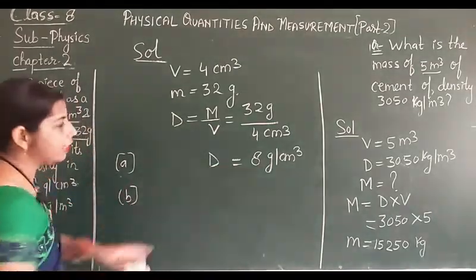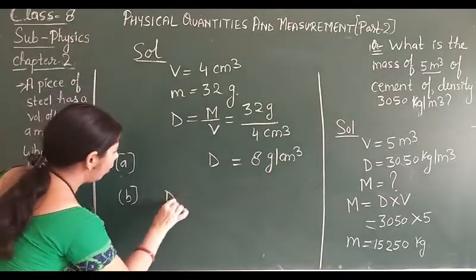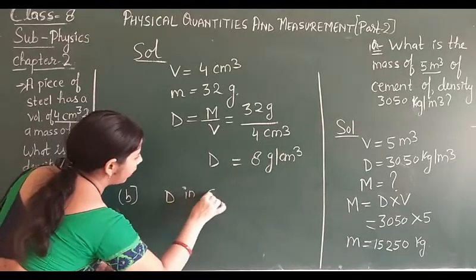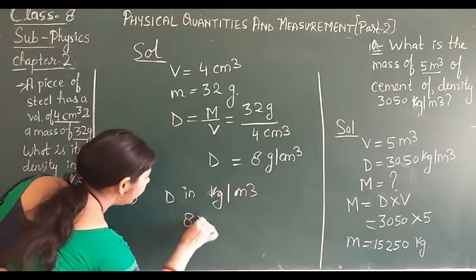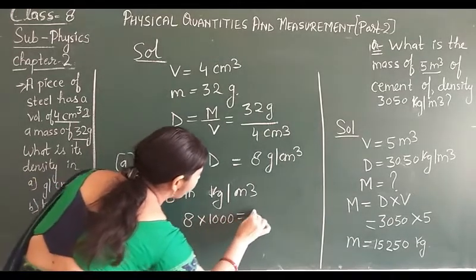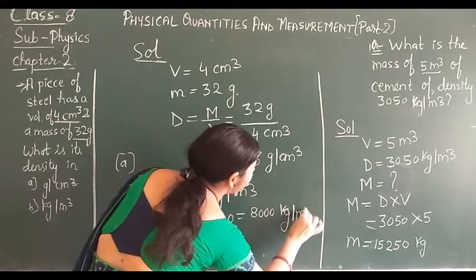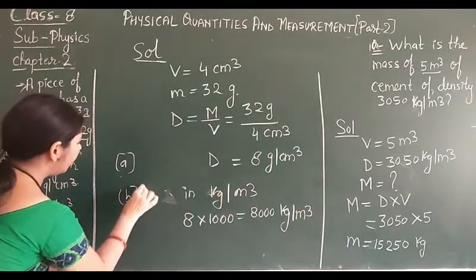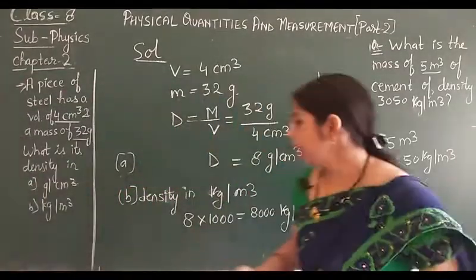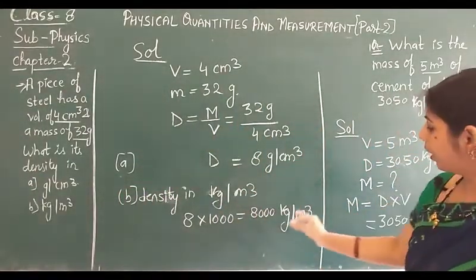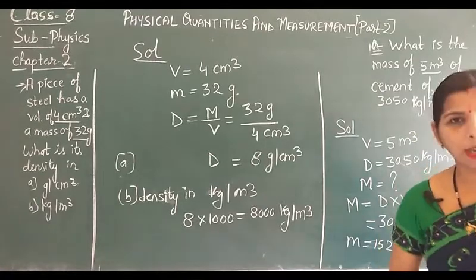Now if we want to convert this density into kilogram per cubic meter, I told you it should be multiplied by 1000. So 8 × 1000 equals 8000 kilogram per cubic meter. In this way we can calculate density, mass, and volume, and also convert between kilogram and gram units. This is all about today's topic; the rest we will discuss in the next video. Till then, bye bye, thank you.